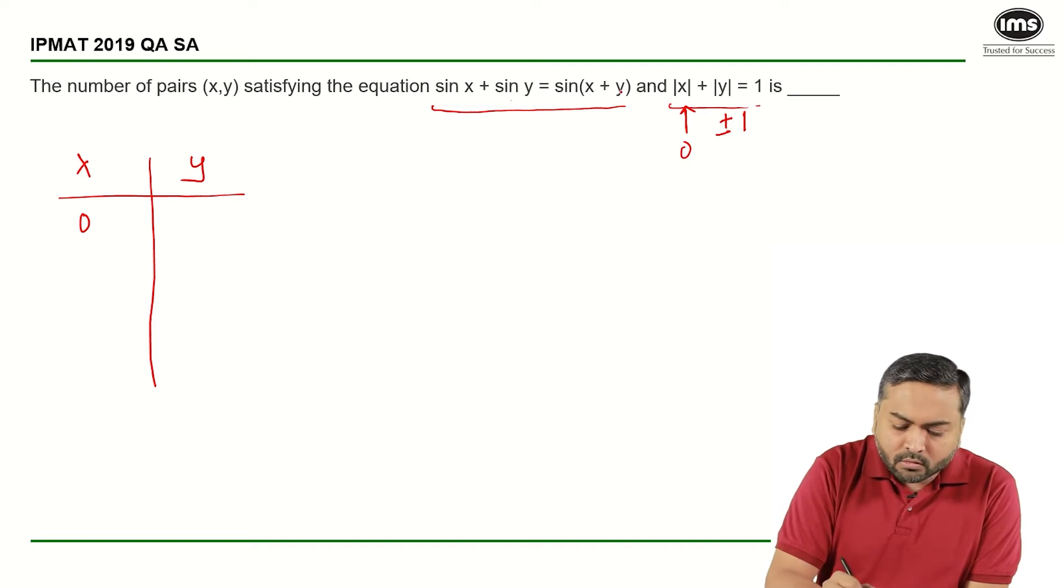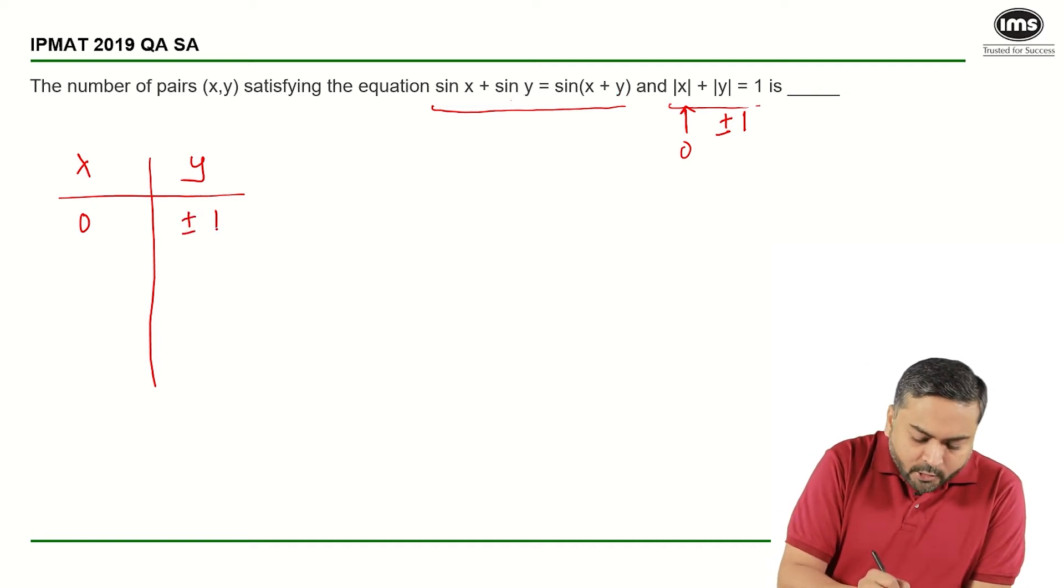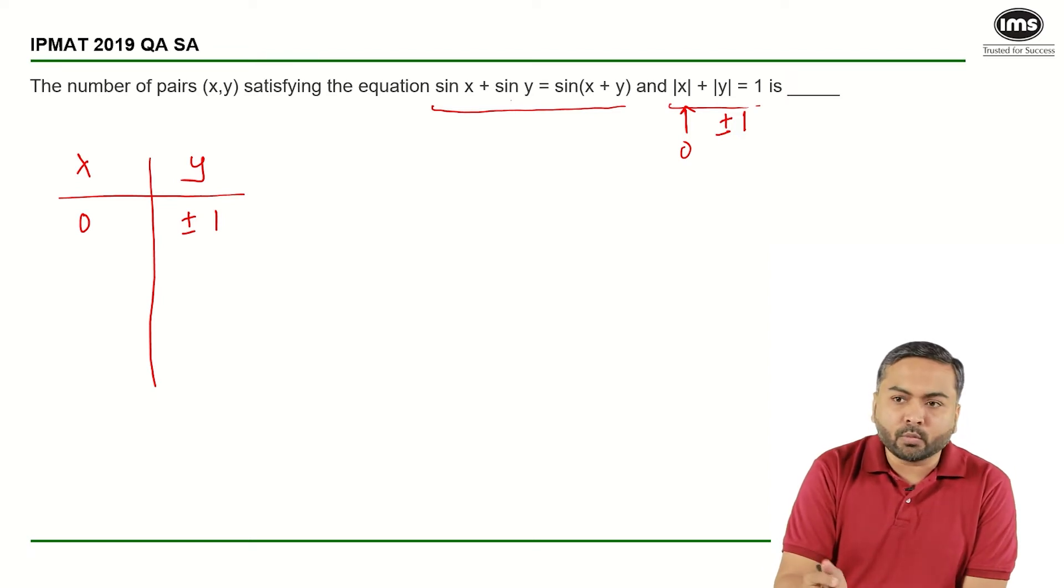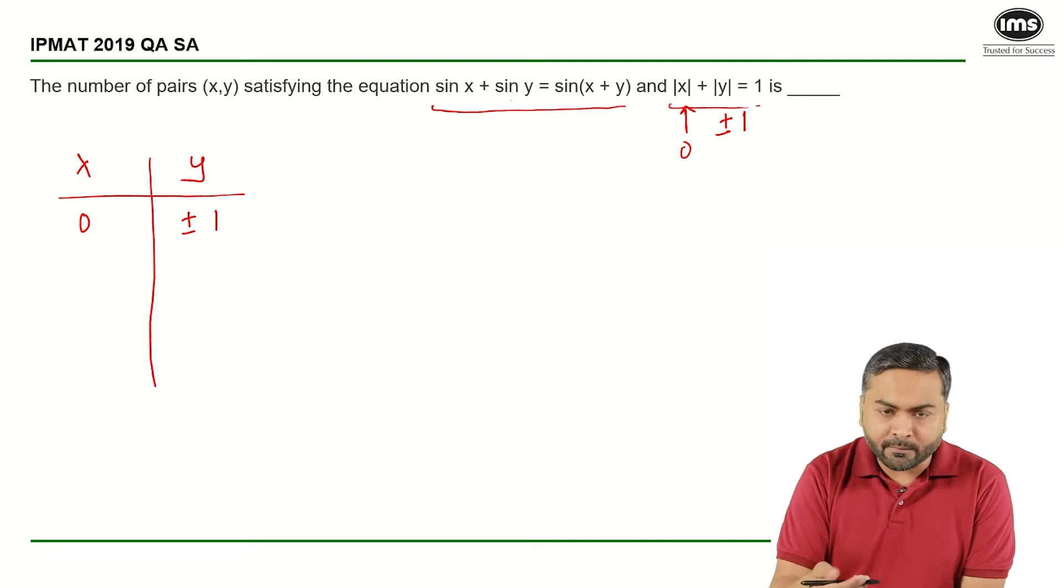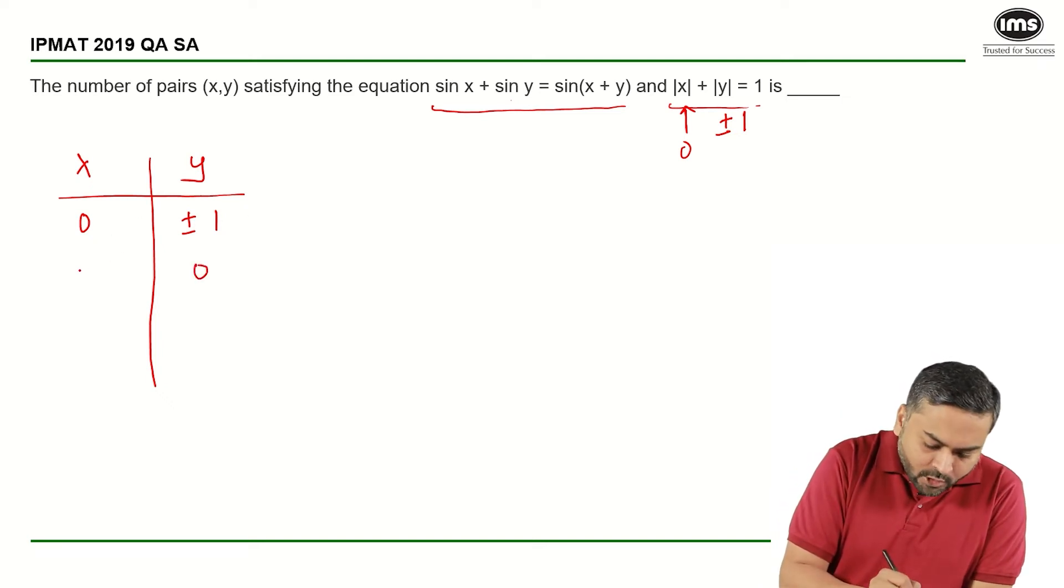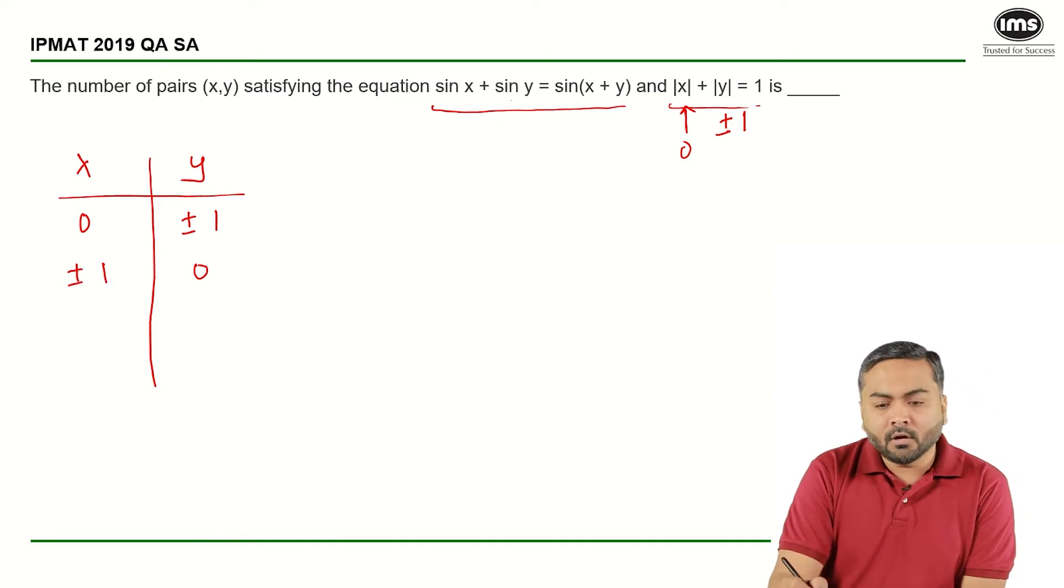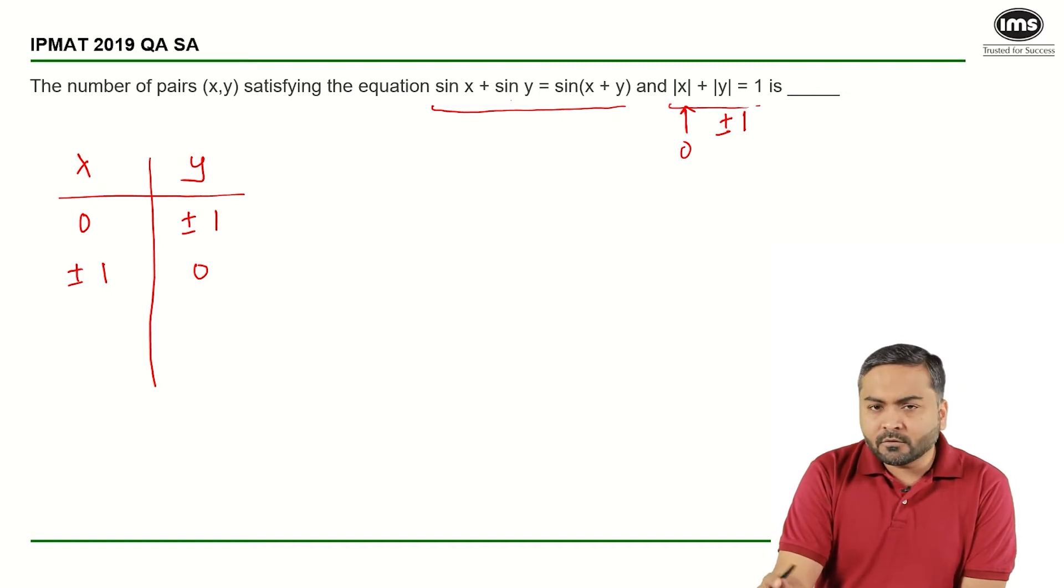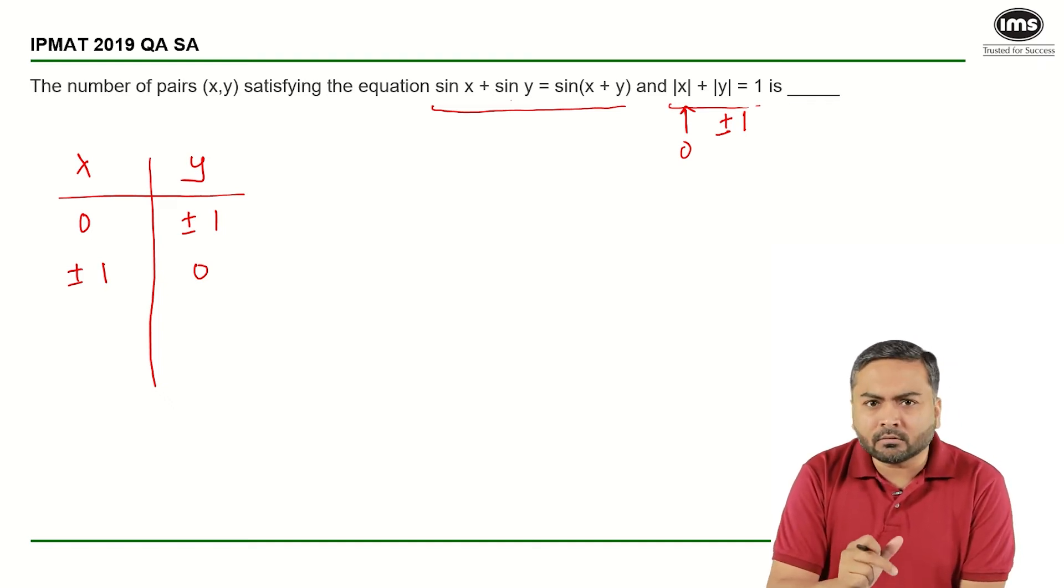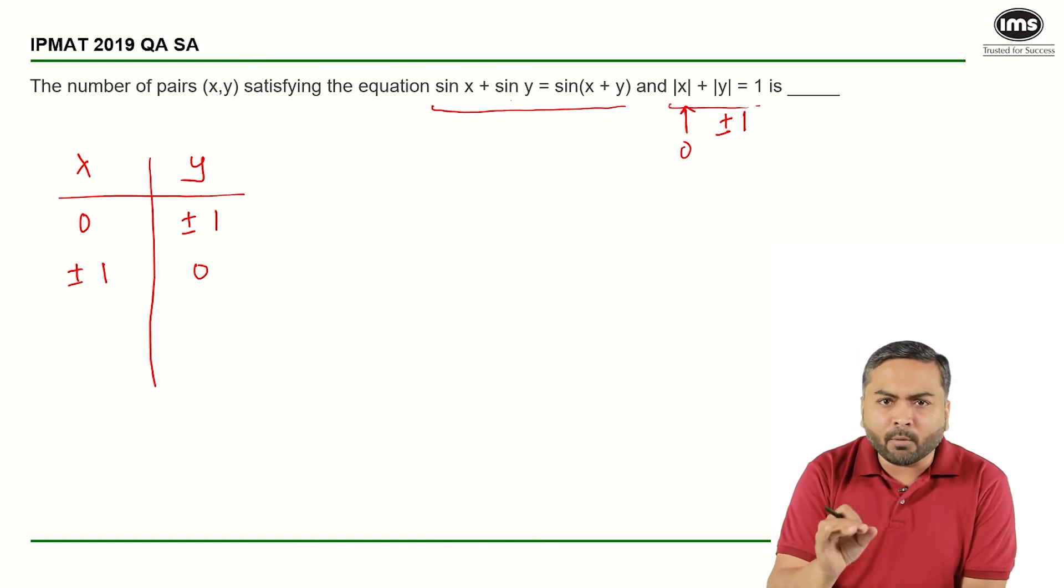sin y is equal to sin of y, which means y can be plus or minus 1. Now, because the equations are symmetric, I can say that y is equal to 0 and x is equal to plus or minus 1 will also satisfy. So these are the four solutions and most of the students make a mistake and go ahead and mark the answer as 4. However, if you see this is an IPM question, it won't be so straightforward. If you get the answer very quickly, always think twice before moving ahead, am I missing any possibility?